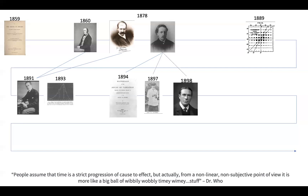Bateson and experimentalists Edith Saunders and Reginald Punnett continued to selectively breed plants in the Cambridge Botanical Gardens and publish observations of discontinuous traits, while Weldon and his wife Florence continued to gather large amounts of data from wild populations of crabs and to collaborate with Pearson in London to develop ways to analyze it.